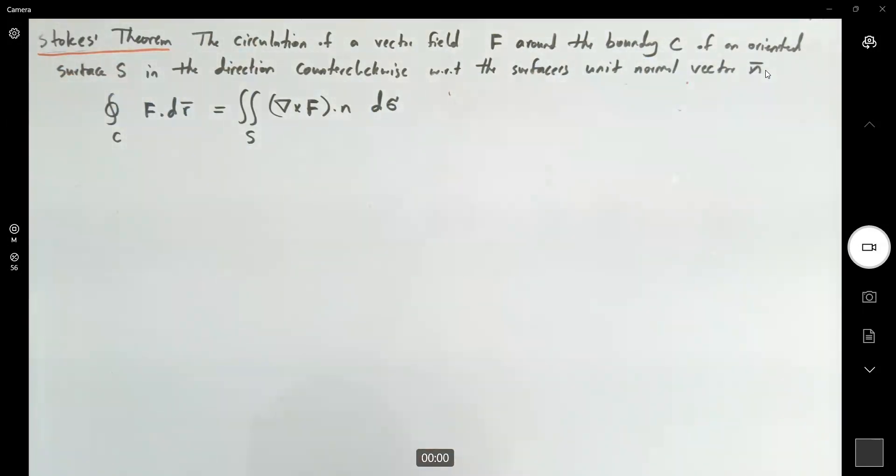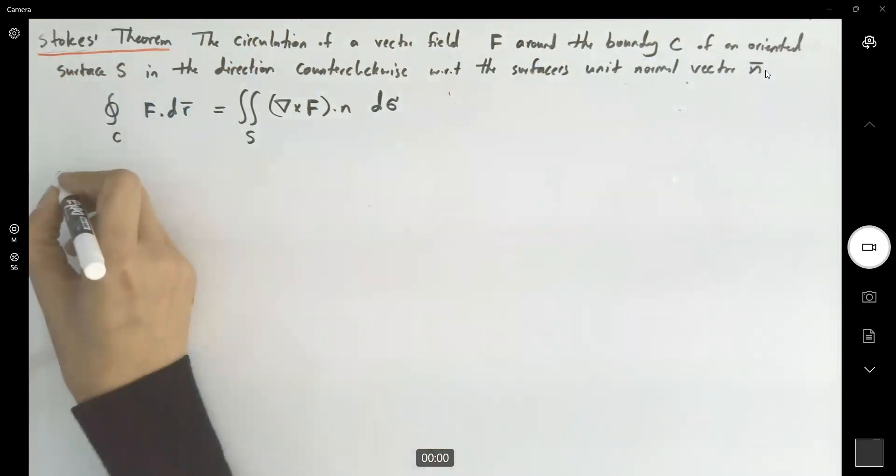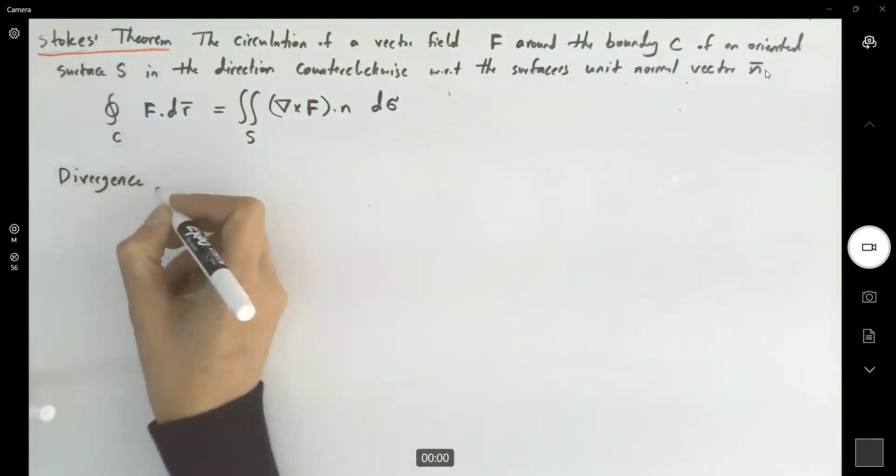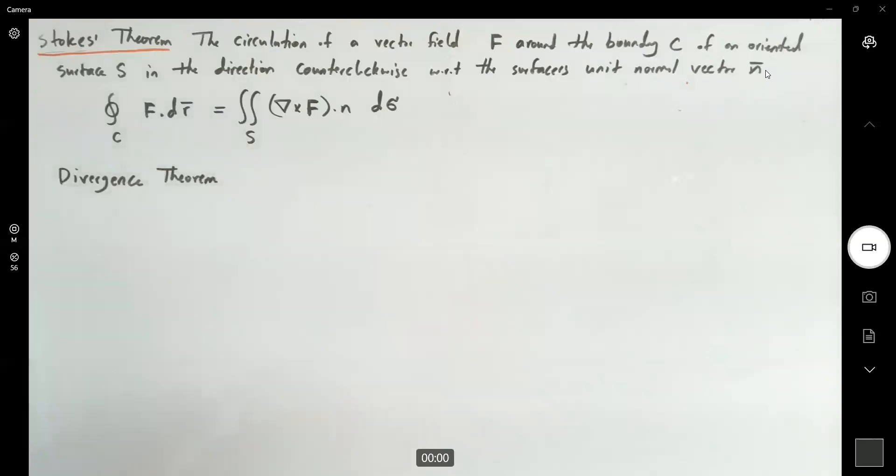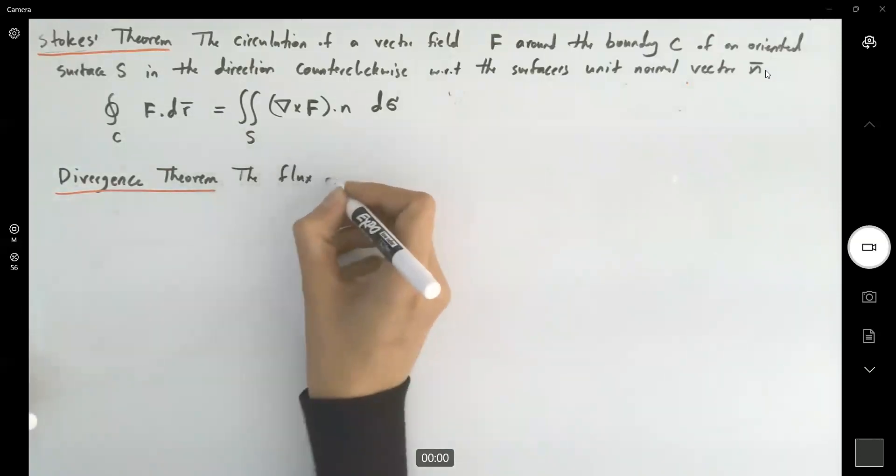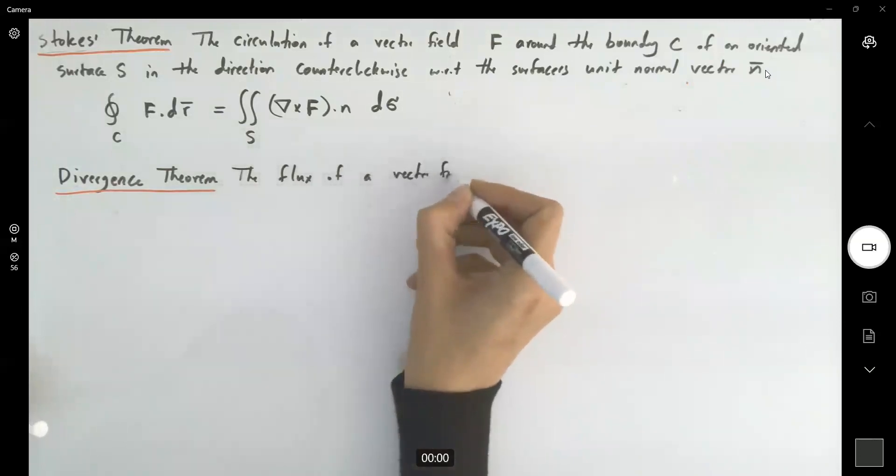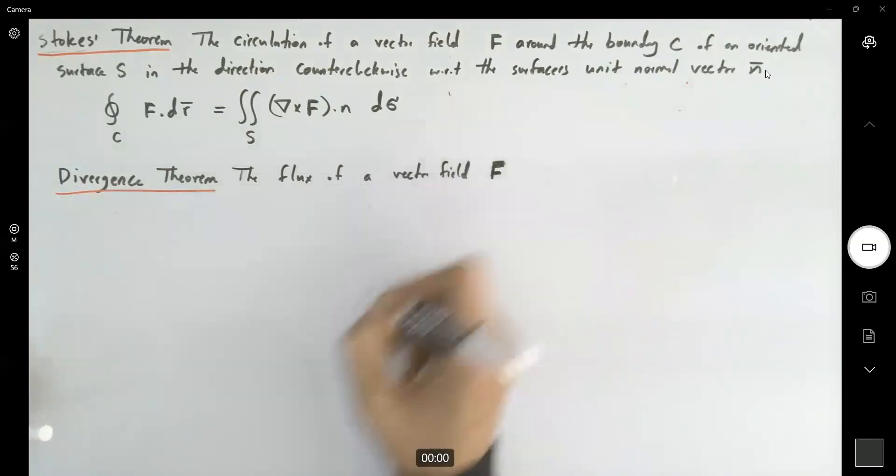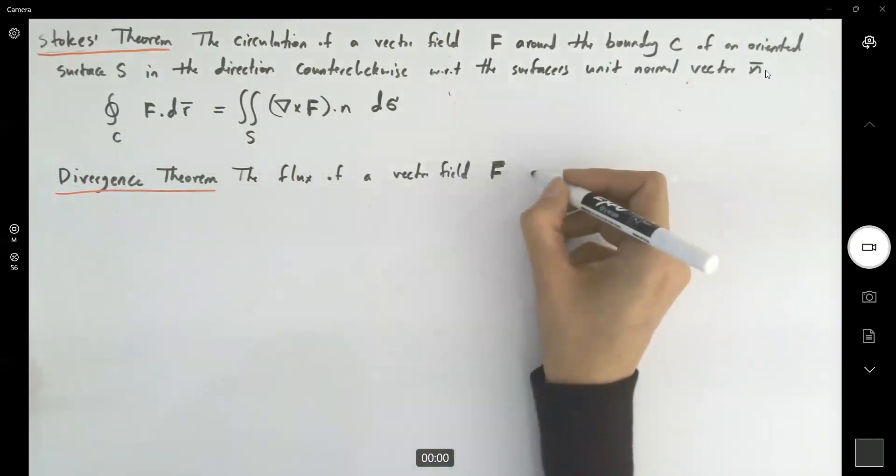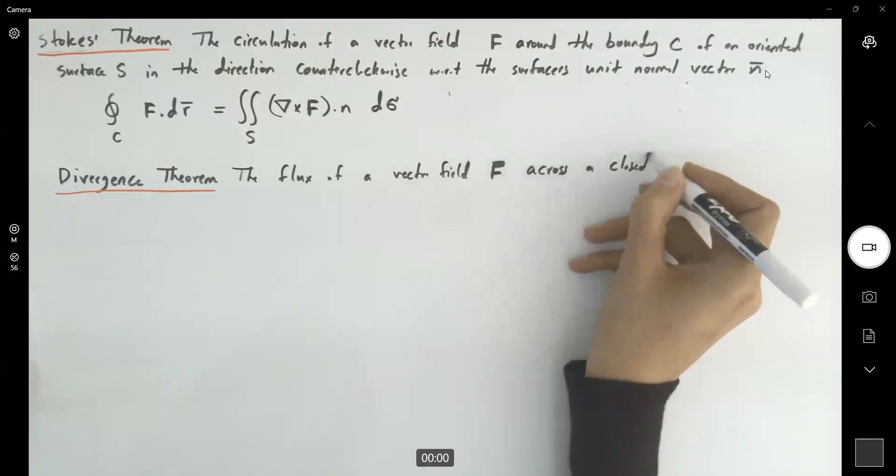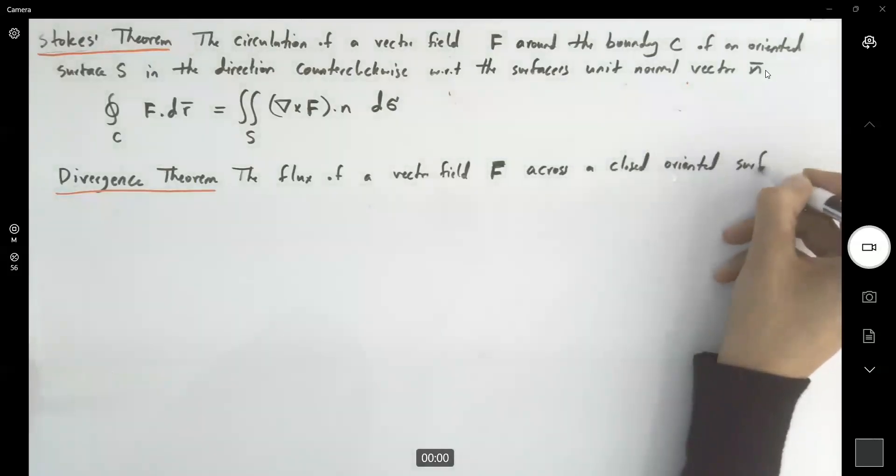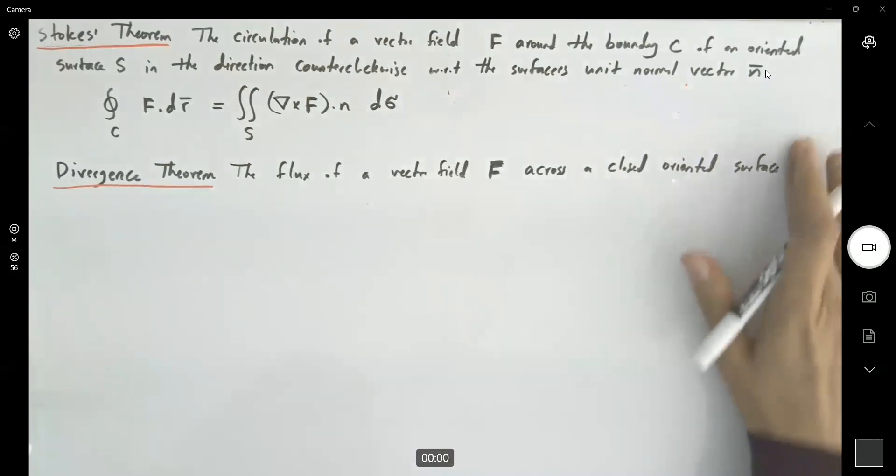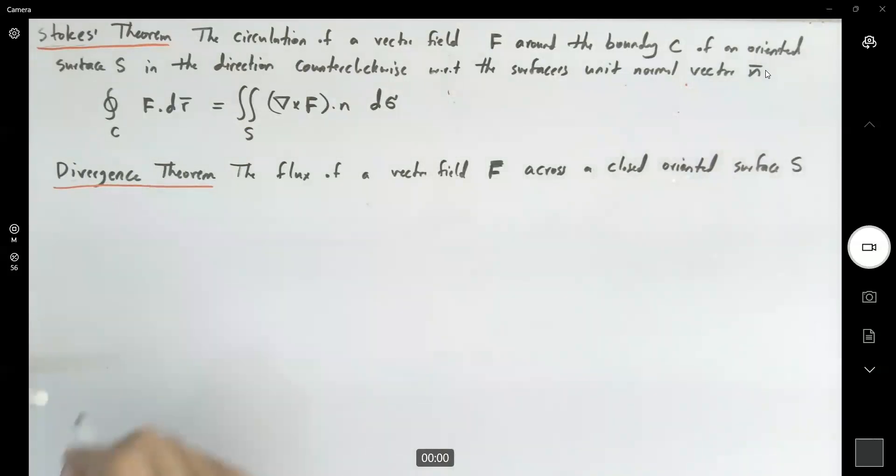Now we have another theorem that we call the divergence theorem. The divergence theorem says the flux of a vector field like f across the closed oriented surface s in the direction of surface outward unit normal vector field.